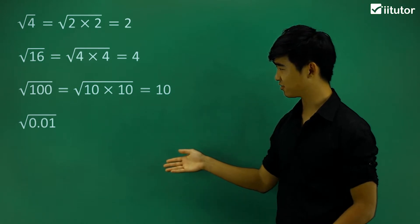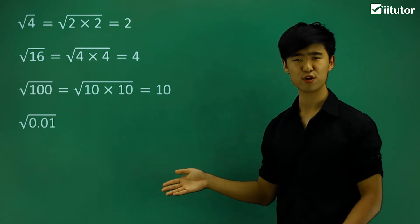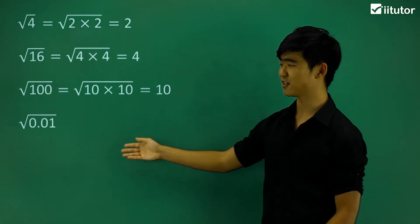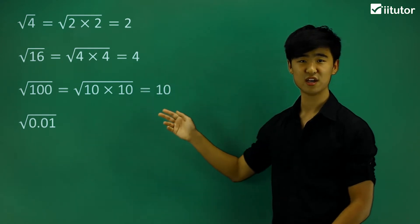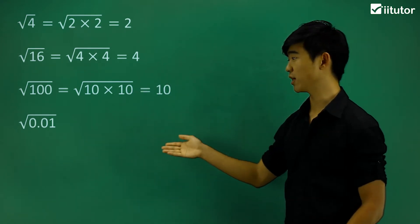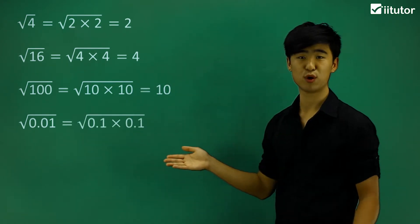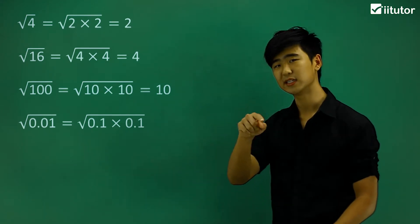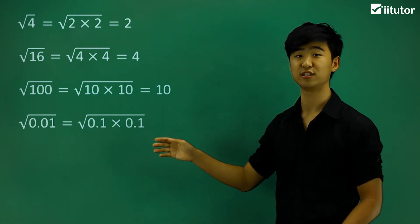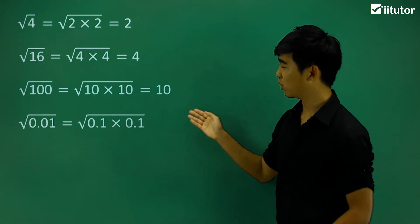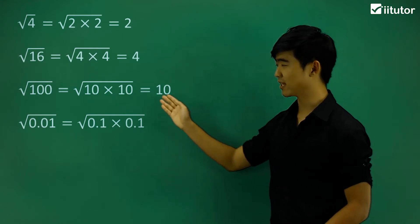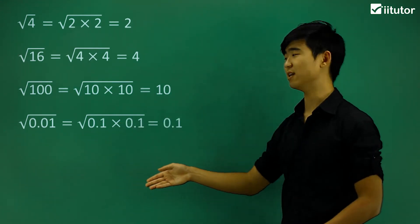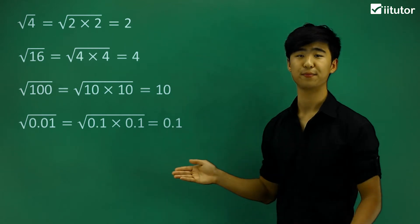Now if we take a look at this example, the square root of 0.01. Now it doesn't necessarily look like a square number like the others, but in fact we can actually break it down into 0.1 times 0.1. You can even test that in your calculator. Once we have this, we can simply just cancel out the square root symbol, and we're left with 0.1.